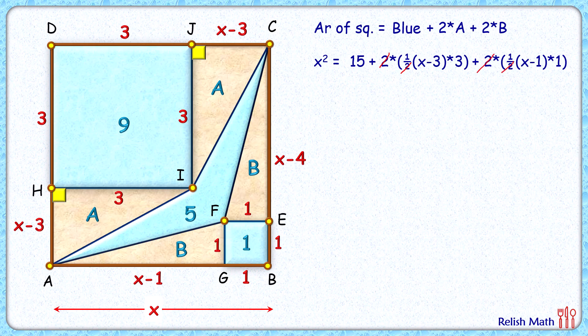Opening the brackets: this will be 3x minus 9, and this will be x minus 1. Now simplifying and taking all terms to the left side, we get the quadratic x square minus 4x minus 5 equals 0.